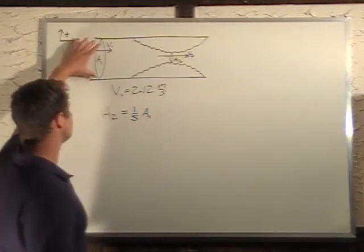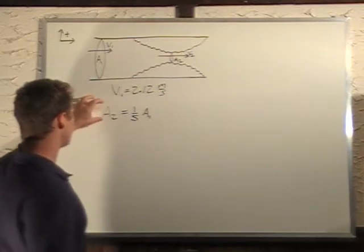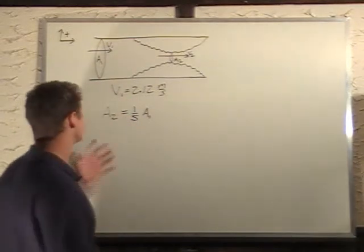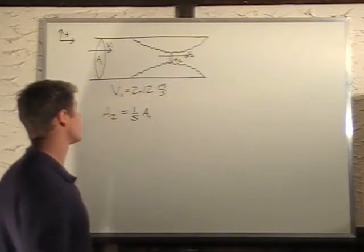And if we look at this, A1 is big, A2 is small. A2 is going to be A1 divided by 5. So that looks about right, because A2 is going to be 5 times smaller.